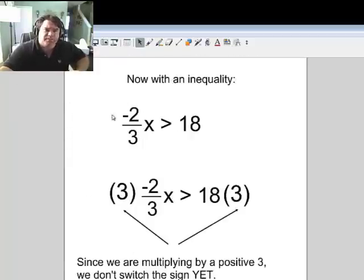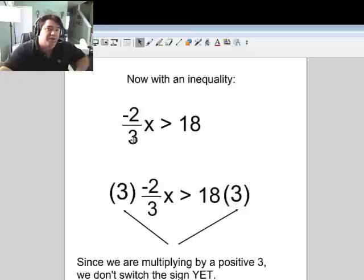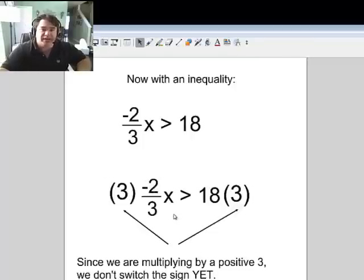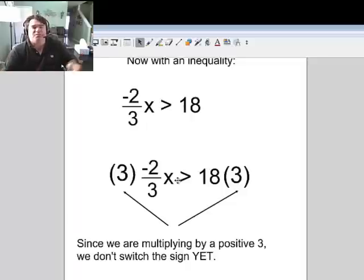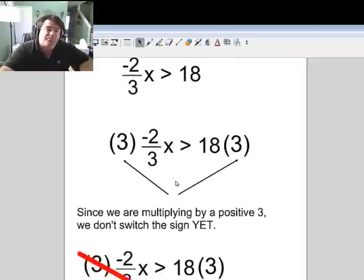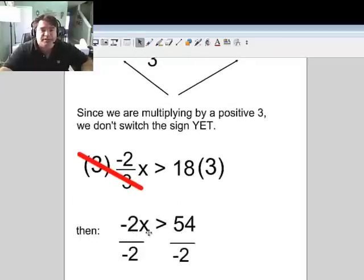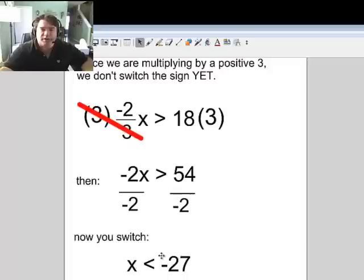Now with an inequality. -2/3 x > 18. The first stop. Instead of divide by 3. Times by 3. Times 3 to one side. Times 3 to the other. Get rid of this. Which makes -2x. Is greater than 18 times 3 I think is 54. I'm pretty sure. Since we are multiplying by a positive 3 we don't switch the sign yet. There's no sign switching yet. Now I know you get confused. Well you're going to switch it one time. So really I don't care if you switch it early or late. I don't until I move that -2. That's just me. Now I divide by -2. Now the sign will switch. From greater than to less than. So x < -27.